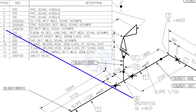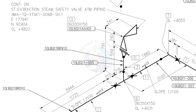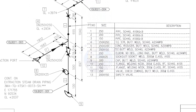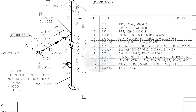Item number 6 is a reducing T. See what item number 13 is — it is a safety relief valve. Being familiar with valve symbols will be a big advantage. Item number 4 is a straight T. Item number 5 is a concentric reducer. Item number 8 is a socket weld branch connection. Item number 9 is a cap.